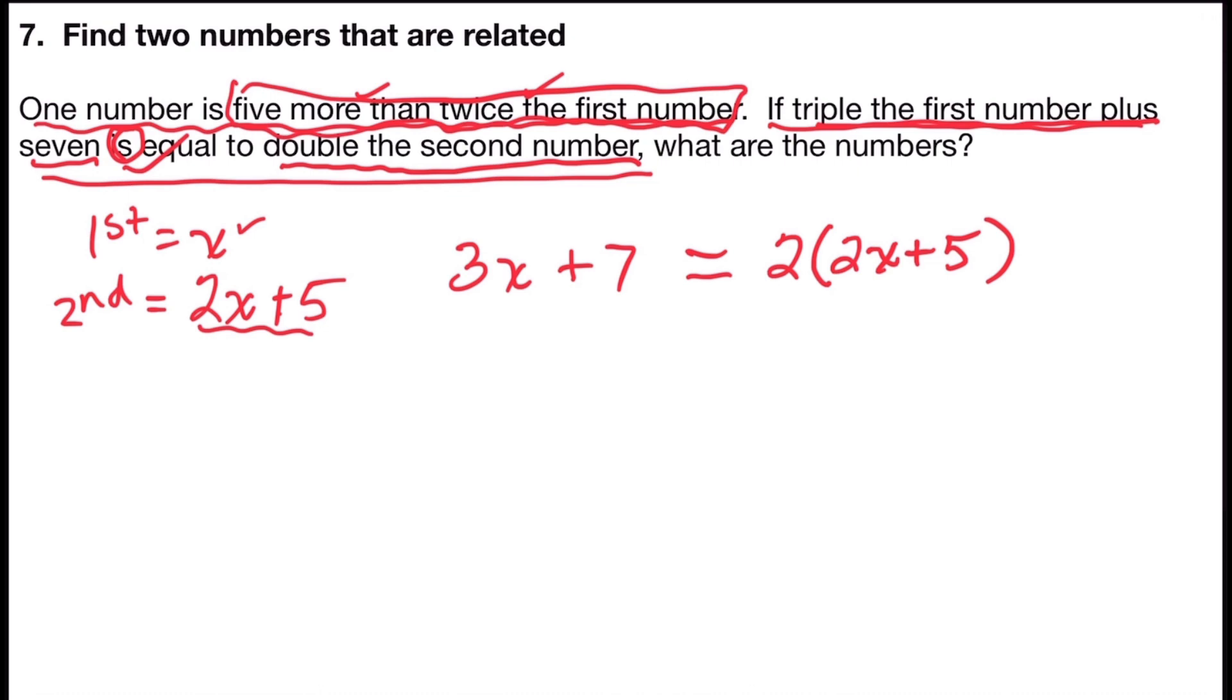Now I'll go through the equation solving process. The left side is already simplified. However, the right side has a distributive property. Two times 2x is 4x and two times five is 10.